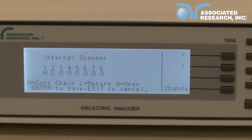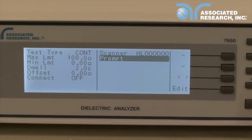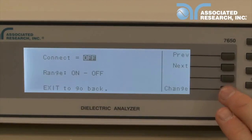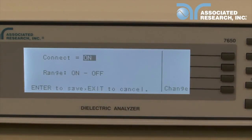Since we're going to run a DC high pot test along with a continuity test, we want to make sure our steps are connected. Scroll down to the connect parameter and press the edit key. Use the change key to change connect to on. Press the enter key.